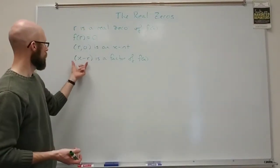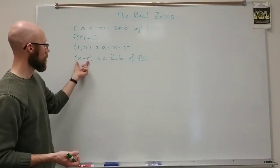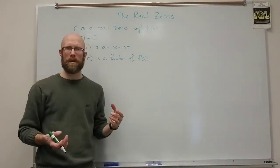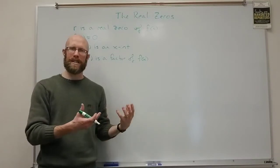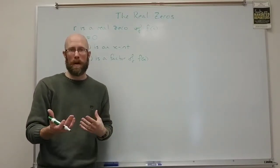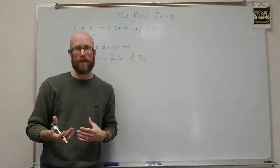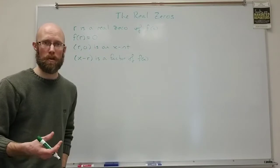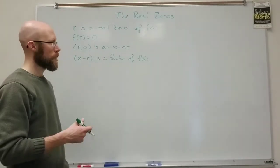If x minus r is a factor of a polynomial, that means it divides into it evenly — no remainder, a remainder of zero — just like it would with numbers.